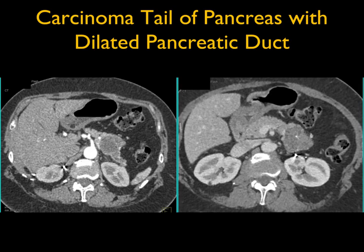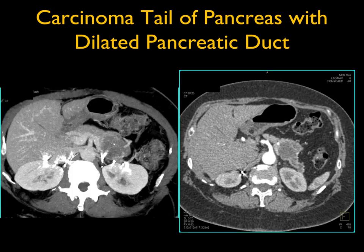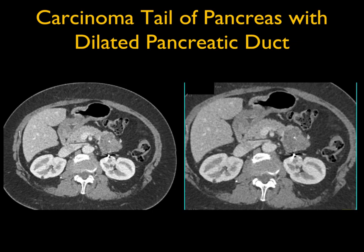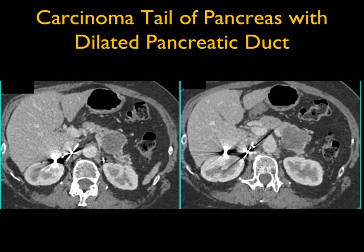Case six: carcinoma of the tail of the pancreas with a dilated pancreatic duct. There's a cystic component to the lesion and a faint calcification. The first thing one might think is: could this be a serous cystadenoma of the pancreas? They often have a Swiss cheese appearance, better seen on venous than arterial phase imaging, with punctate central calcifications. However, in this case, the dilated pancreatic duct and distal gland atrophy are helpful clues — it's rare to see duct dilatation with serous cystadenoma. This was actually an adenocarcinoma simulating a serous cystadenoma.